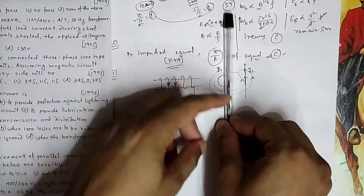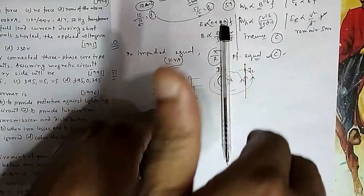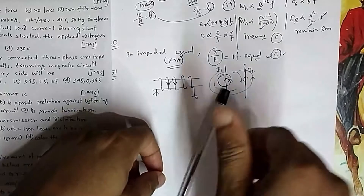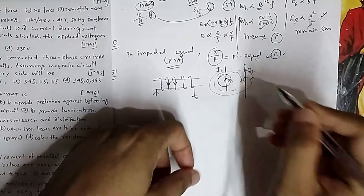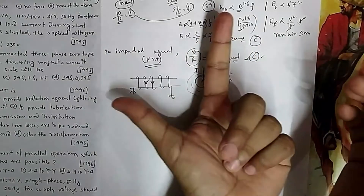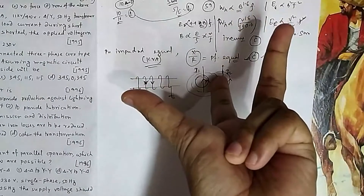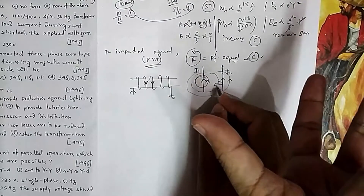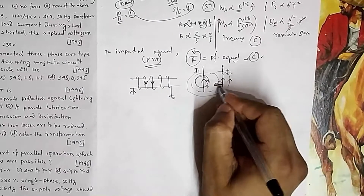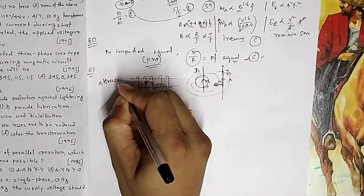The magnetic field is going inside on one side and coming out on the other side. Using Fleming's left-hand rule (since we are calculating force, like a motor), with the field going down and the current direction as shown, the force on this conductor is directed inward. Similarly, due to the magnetic field from the second conductor, the other conductor is also forced inward — so there is attraction. That is option A.